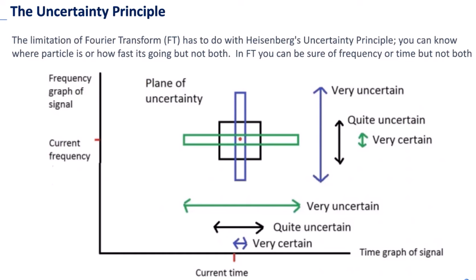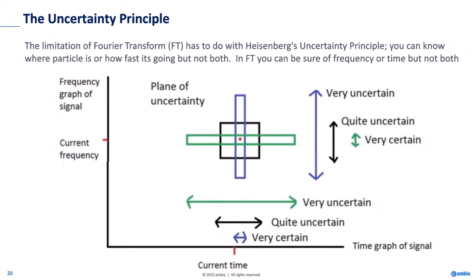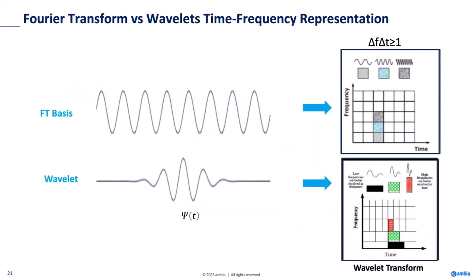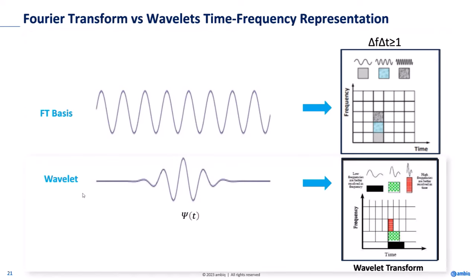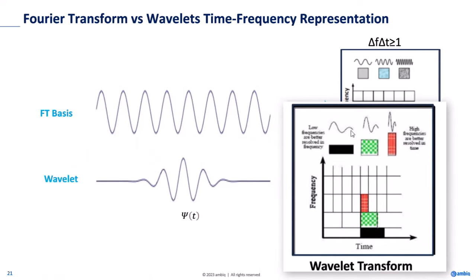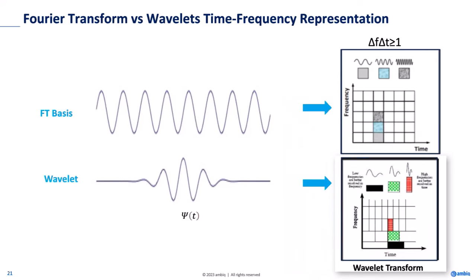Wavelets are a small wave — a French word — that die out after a certain time. These are little waves which you can compress, stretch, or contract depending on the signal. Wavelets are called a mathematical zoom function. Fourier transform works great for capturing global features using sine and cosine that go from minus infinity to plus infinity. On the other hand, wavelets provide local information — frequency details and temporal details — and meet admissibility conditions, providing finite energy as opposed to Fourier transform which gives infinite energy.